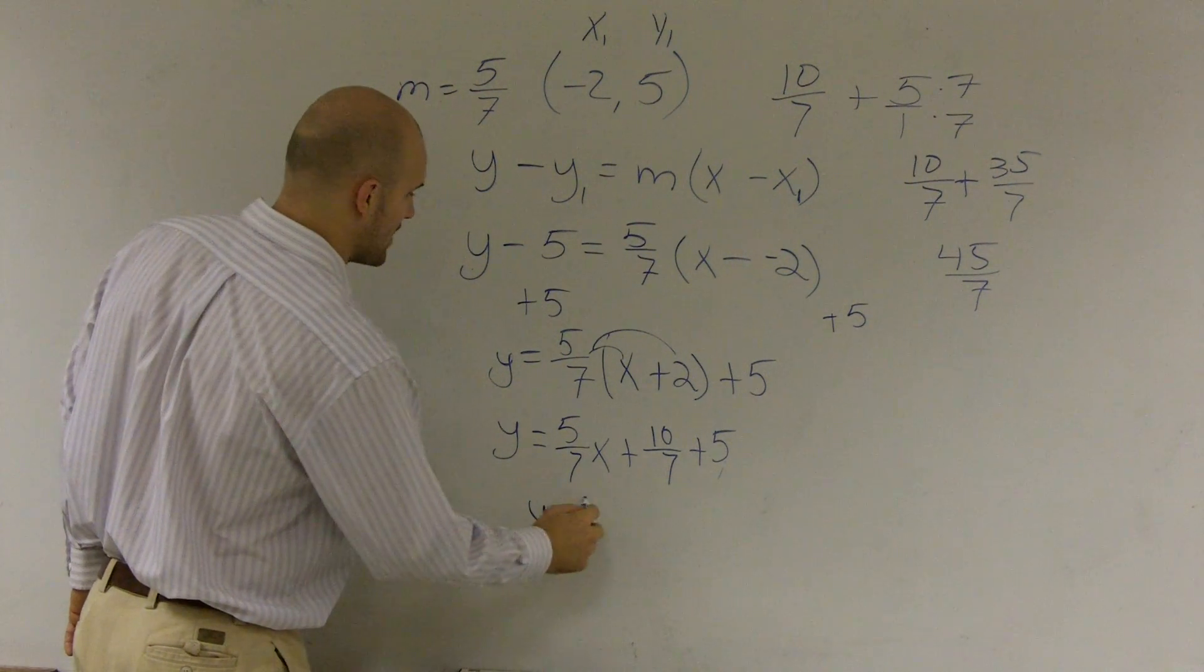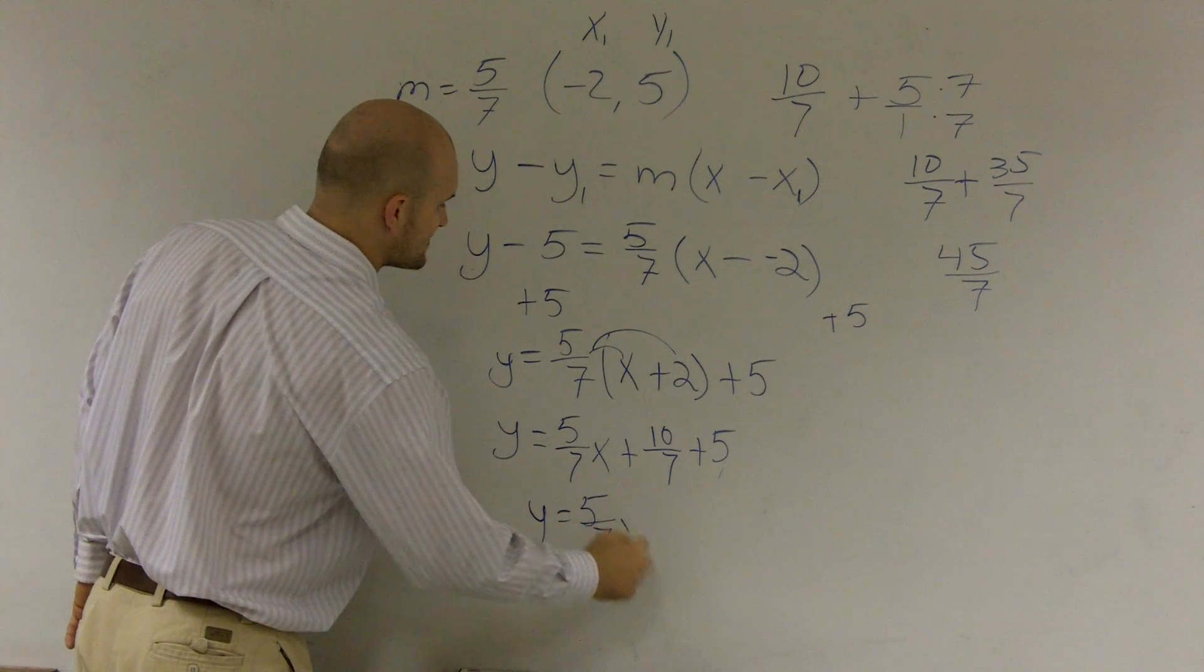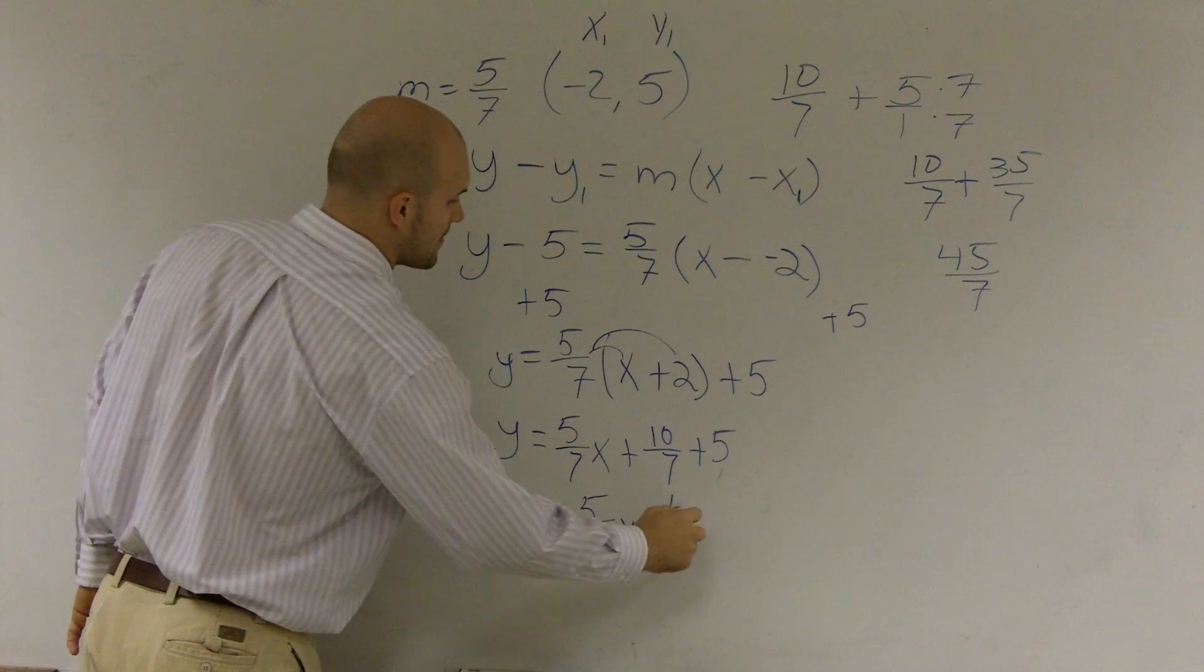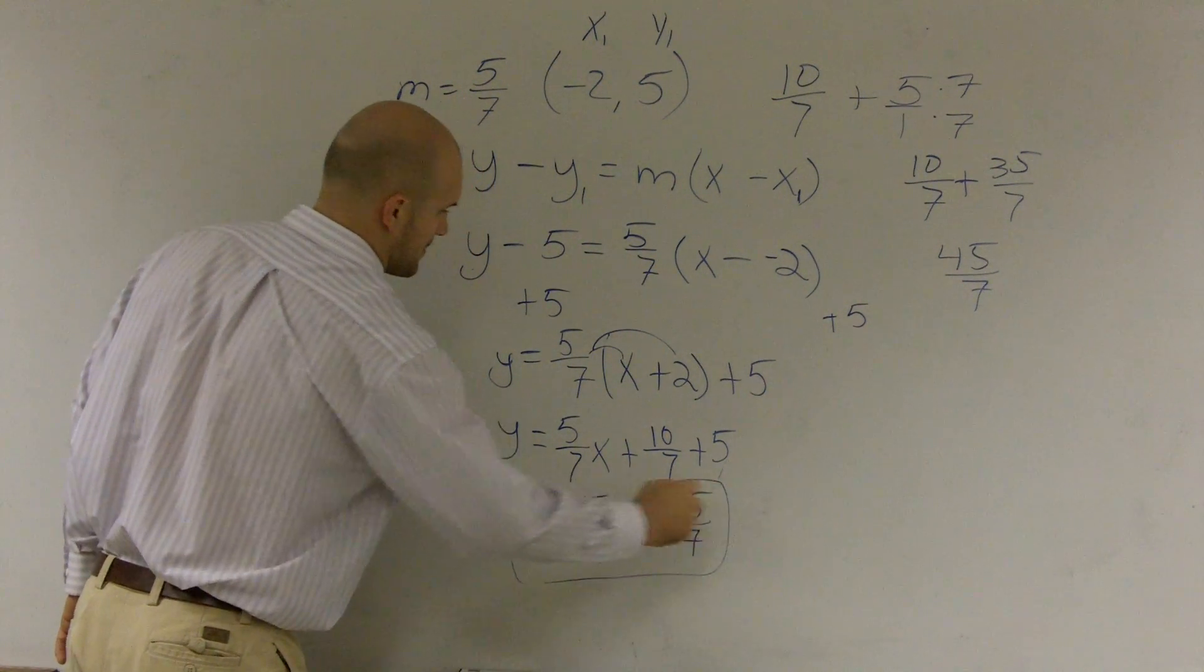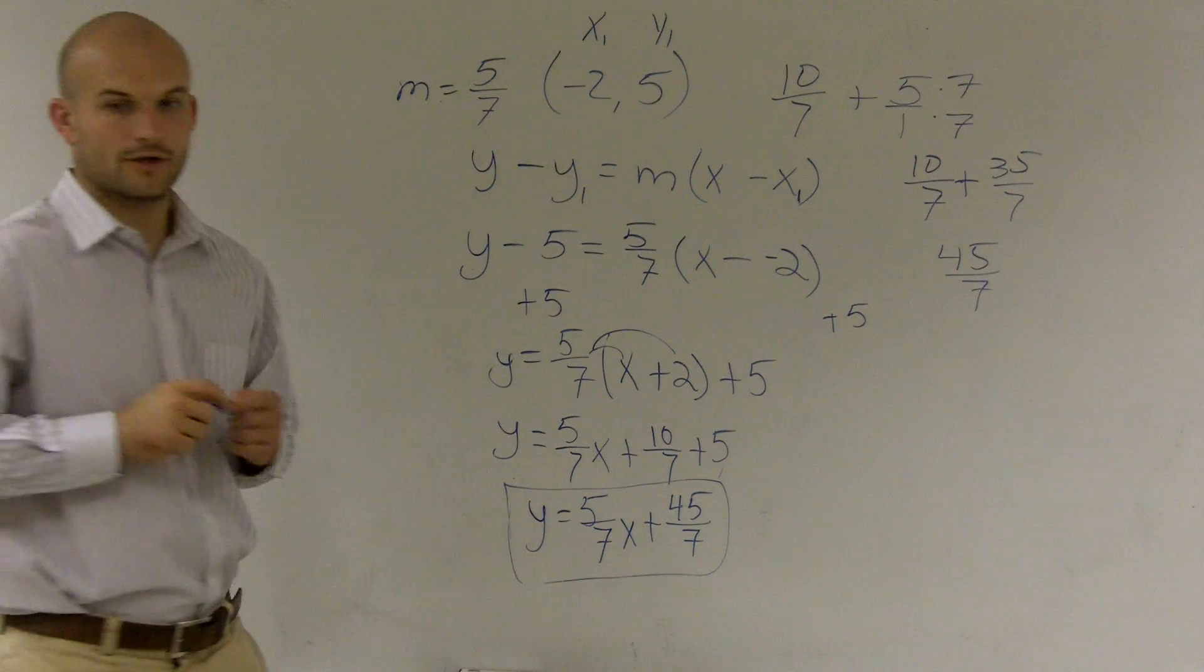So therefore, my final answer is y equals 5 sevenths x plus 45 over 7. There you go.